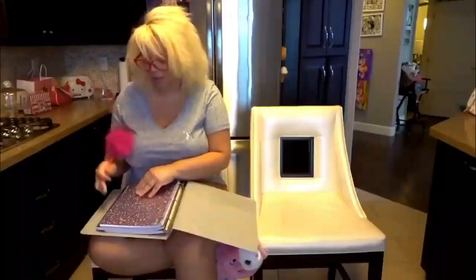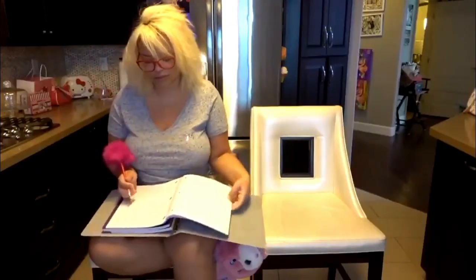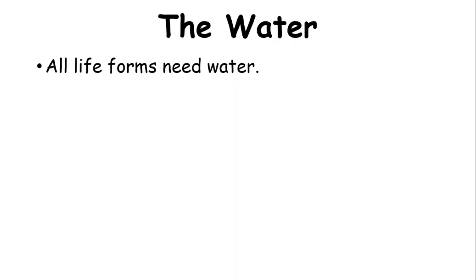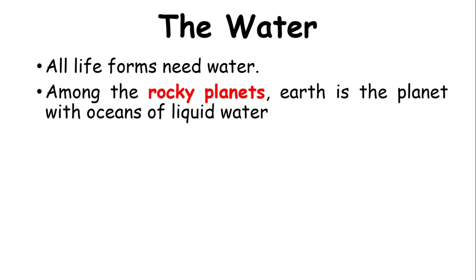The next one is water. All life forms need water. Without it, life on Earth won't be possible. The human body is actually 60% water. The Earth is unique amongst the rocky planets in the solar system because it is the only planet with oceans of liquid water. The rocky planets are Mercury, Venus, Earth, and Mars. They are the closest four planets to the Sun and are made up of rocks and metals.